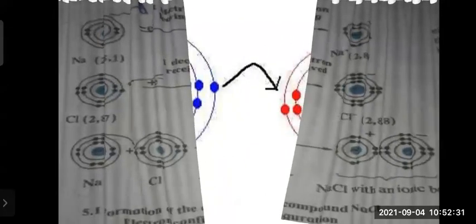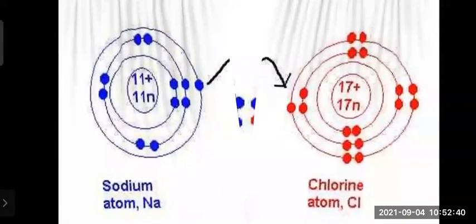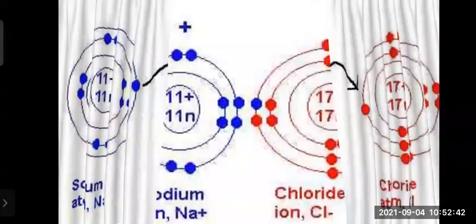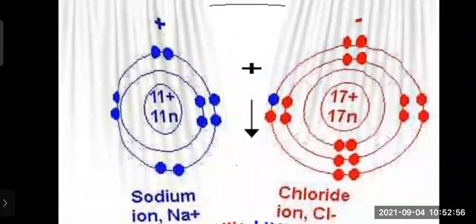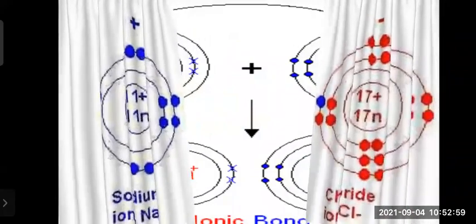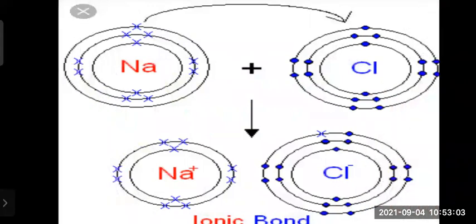I have given you many examples of electronic configuration through different figures. This shows how the sharing of electrons takes place, and how sodium gets the positive cation (Na+) and Cl gets the negative anion (Cl−). One more figure shows the ionic bond of sodium chloride.